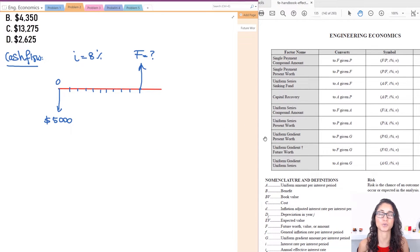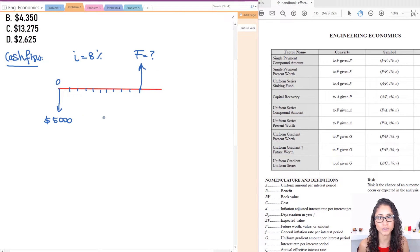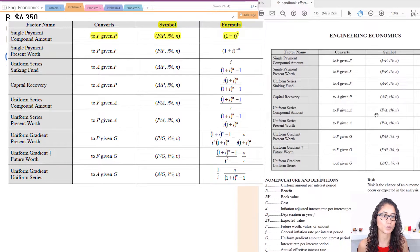So to calculate for the future worth we're going to go to page 135 on the reference manual and we're going to look at the equation. So here we have convert to F given P, that's exactly what we need because we want to convert to the future worth given the present worth. And here as you can see we have two equations and they're actually the same thing. If you use this one or this one you will get the same answer.